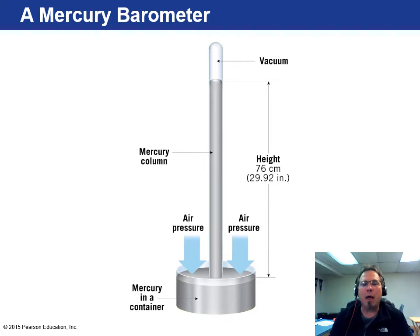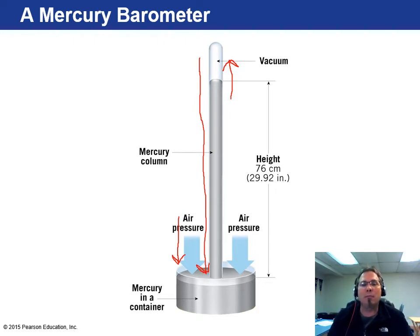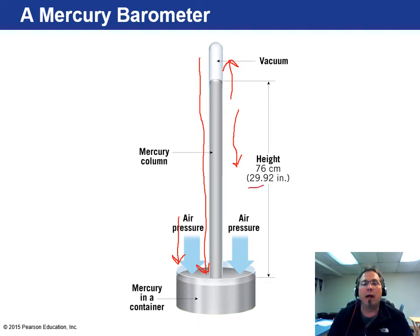Here's an image of Torricelli's mercury barometer. You have a glass tube with a vacuum — no air inside — inverted into a pool of mercury. As air pressure pushes down on the pool, mercury rises higher in the tube, which we call high pressure. When there's less pressure, the mercury goes back down into the pool — that's low pressure. The average at sea level is 29.92 inches of mercury.